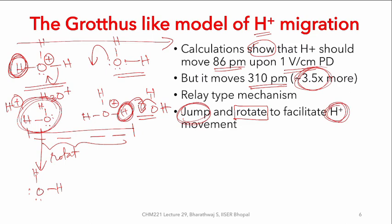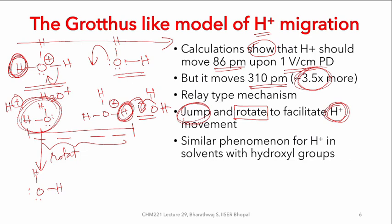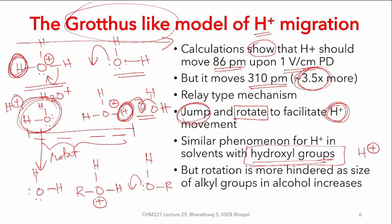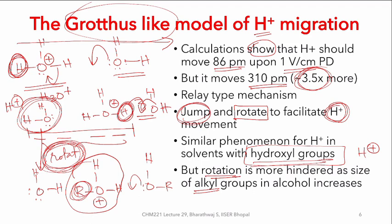The jumping of protons between nearby solvent molecules followed by rotation of the molecule ends up facilitating the movement of H⁺, which is much faster than would otherwise be achieved. A similar phenomenon is also observed for hydroxyl groups — for instance in an alcohol, the same thing would happen wherever hydroxyl groups are present. However, the rotation that follows for an organic alcohol would be hindered by the size of the alkyl groups, meaning rotation requires more energy as the alkyl group increases.